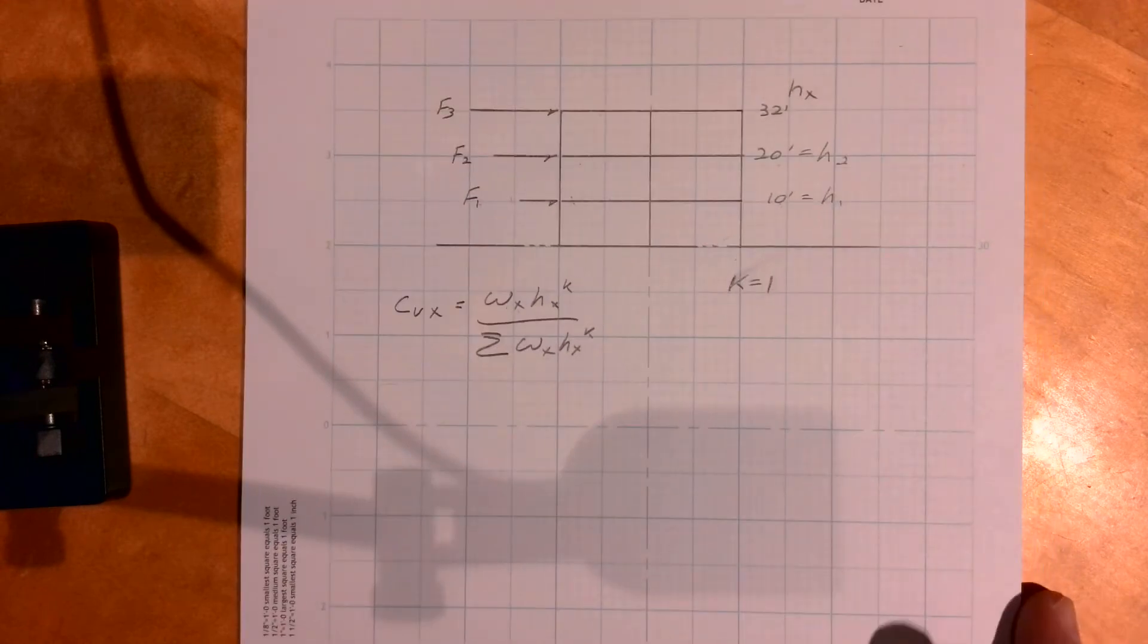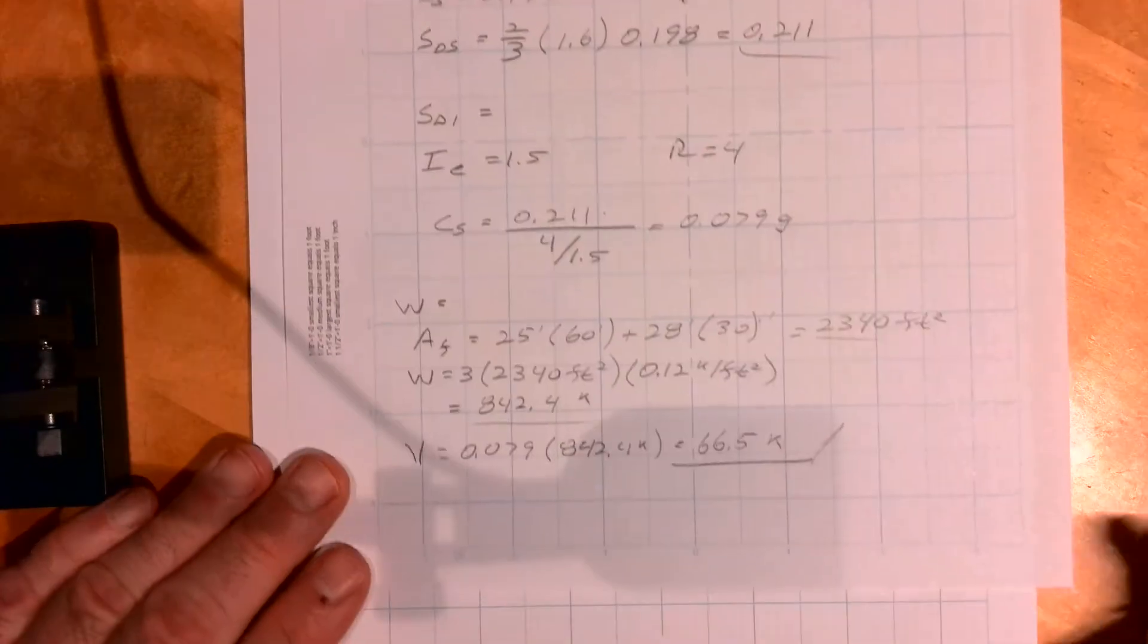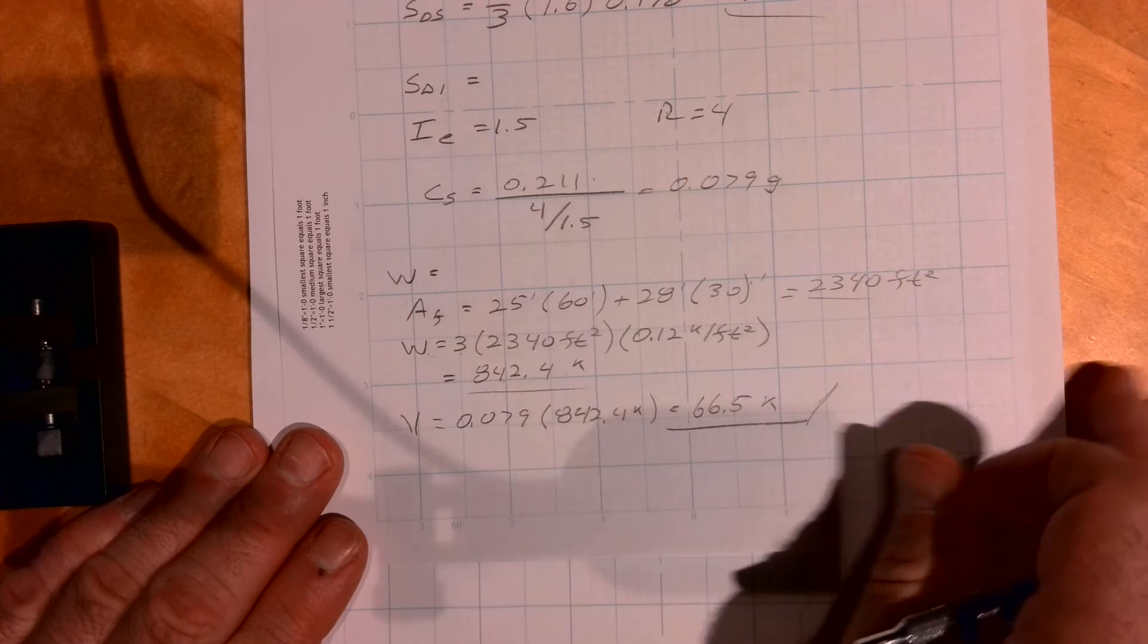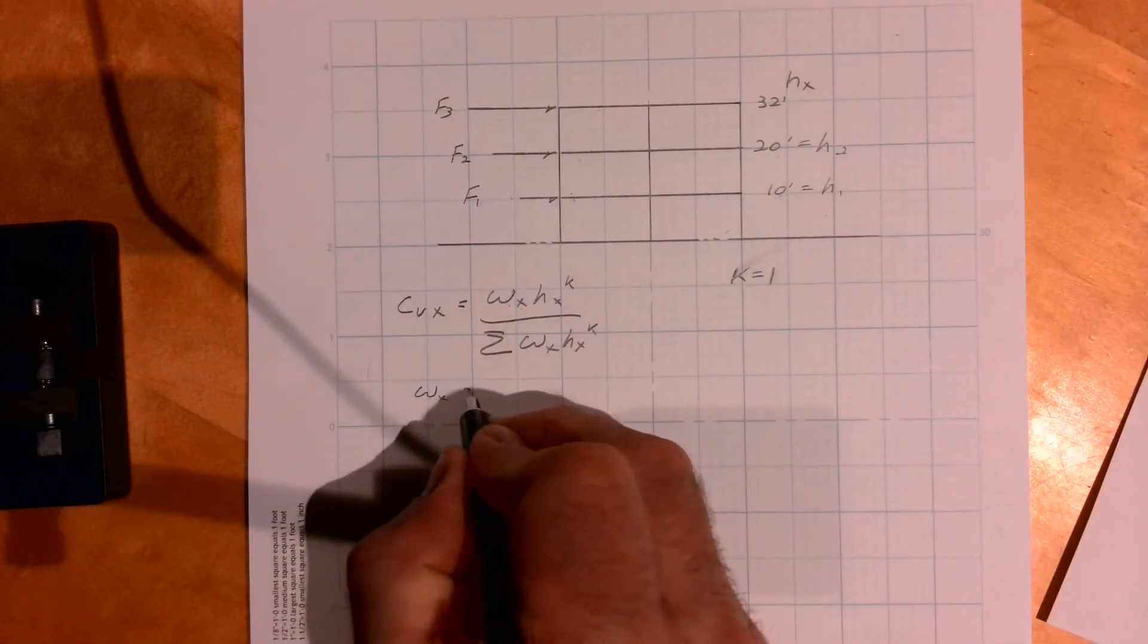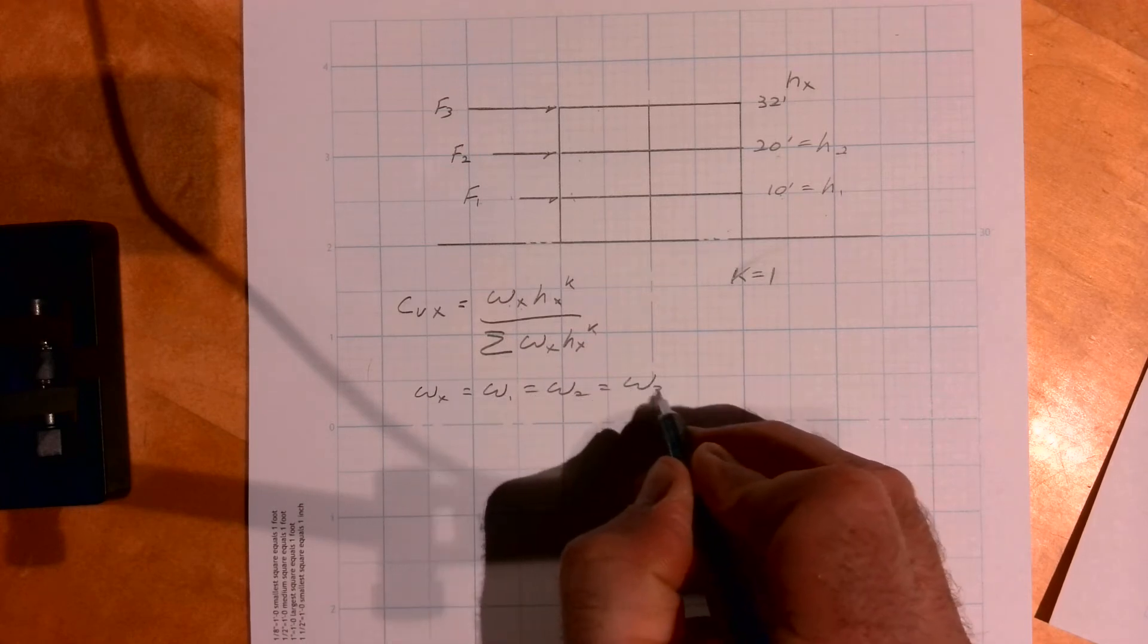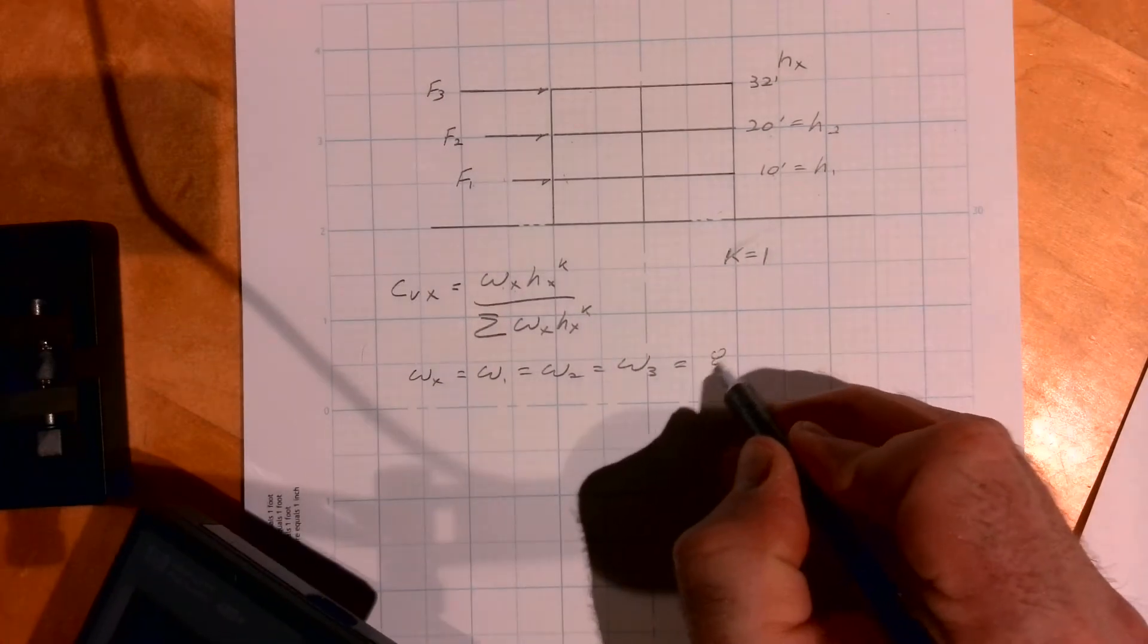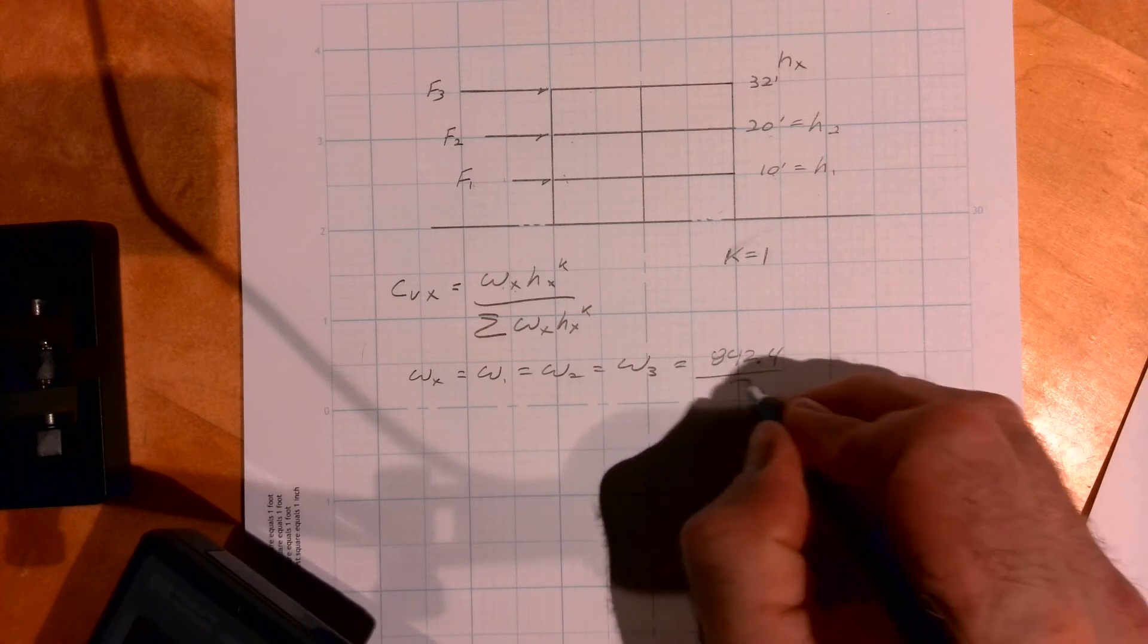For your design project just use a k of one, or you can figure out what the period is from ASCE 7 if you care to, but that's kind of a pain in the butt. Okay, so let's go back to our weight. We have our total weight is 842.4, so if I divide that by 3, that's equal to w1, w2, and w3.